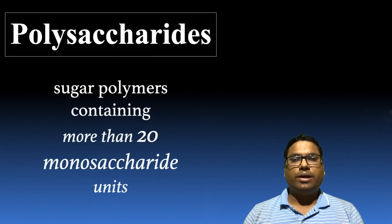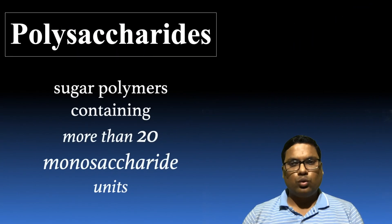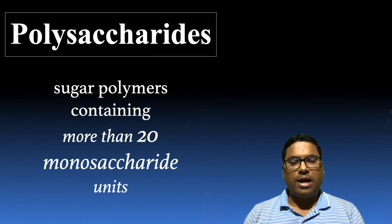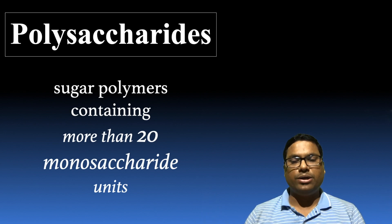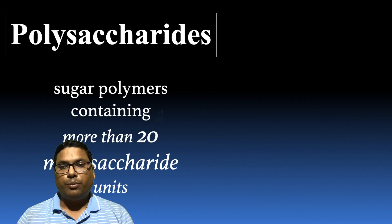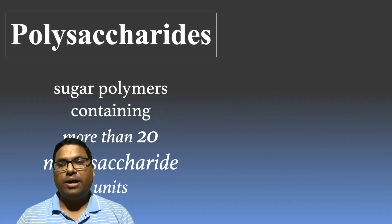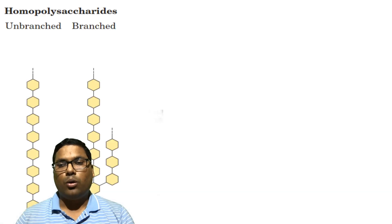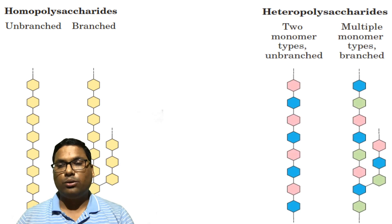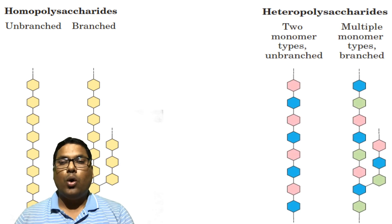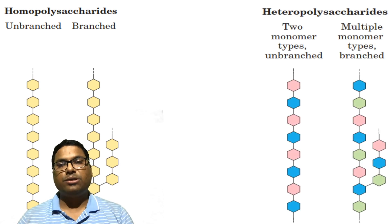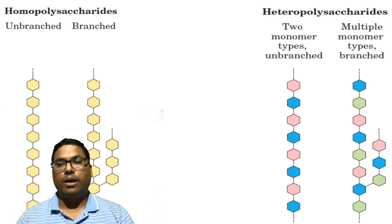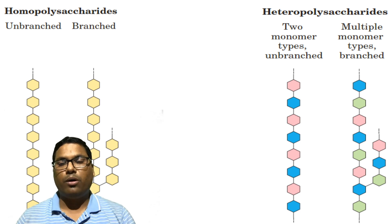What do you mean by polysaccharides? They are sugar polymers having more than 20 monosaccharide units in them. Polysaccharides are divided into homopolysaccharide and heteropolysaccharide. Homopolysaccharides have a single monosaccharide unit linked with the glycosidic bond, while